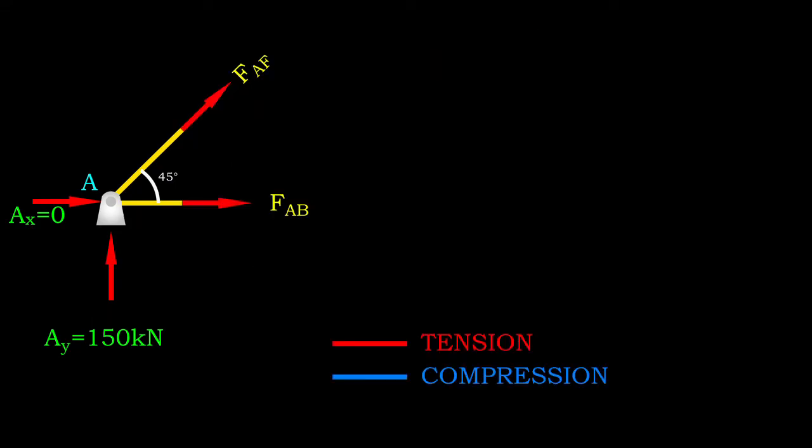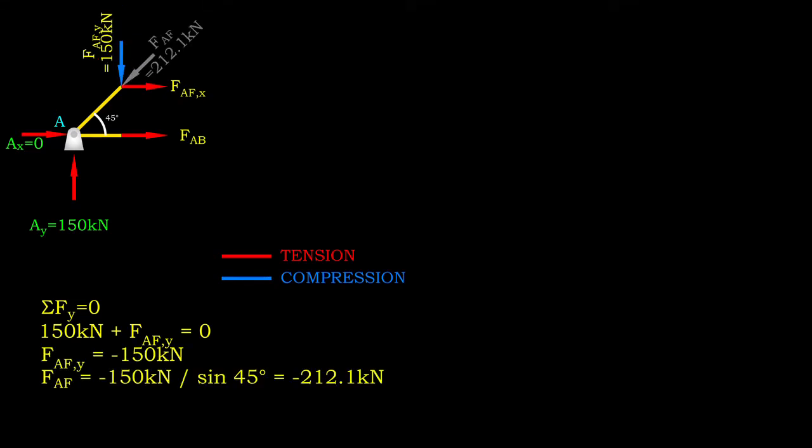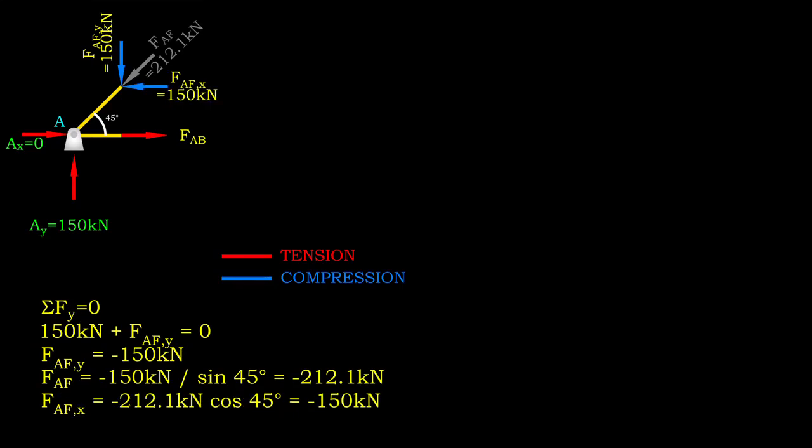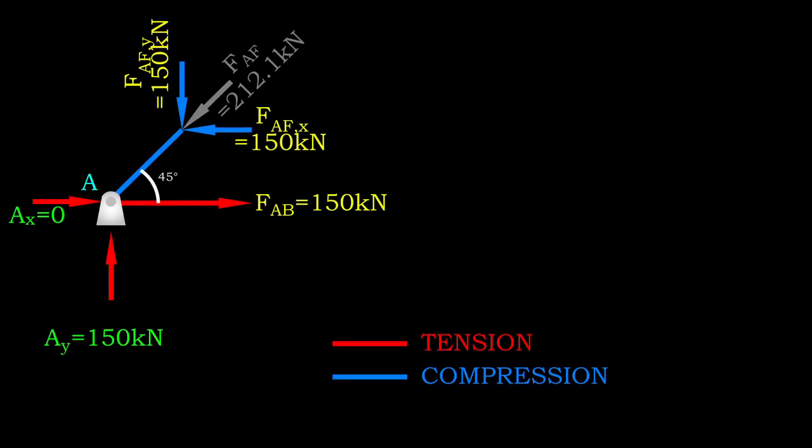First, we zoom into joint A. A quick recap, we need to choose the joint that does not have more than 2 unknown forces. By using reaction EY, we know member AF is experiencing 212.1 kN of compression. Then, we use this value to solve for member AB, which is experiencing 150 kN of tension.